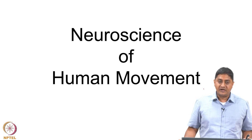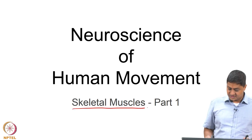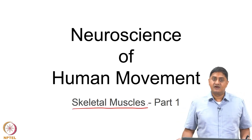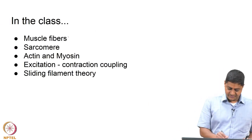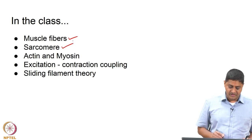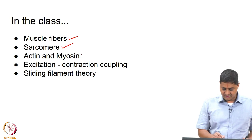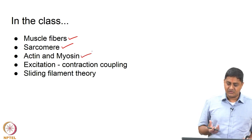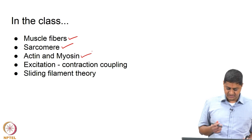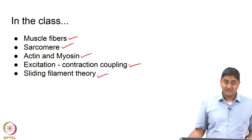Welcome to this class on Neuroscience of Human Movement. In today's class we will be talking about skeletal muscles. This is part 1 of our series on skeletal muscles. We will discuss muscle fibers, the sarcomere as the smallest functional unit, actin and myosin and how they interact to produce force, excitation-contraction coupling, and the sliding filament theory.